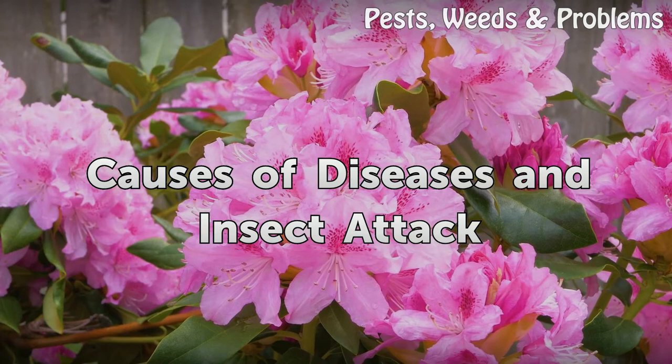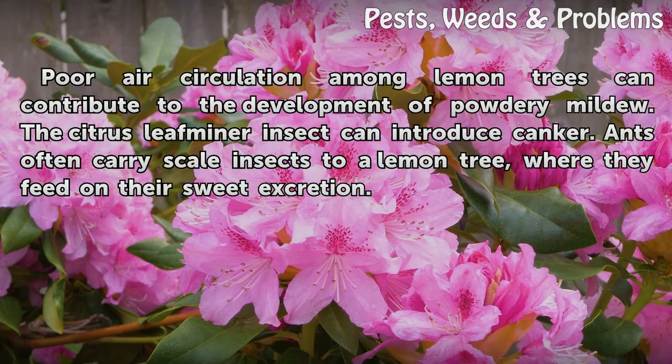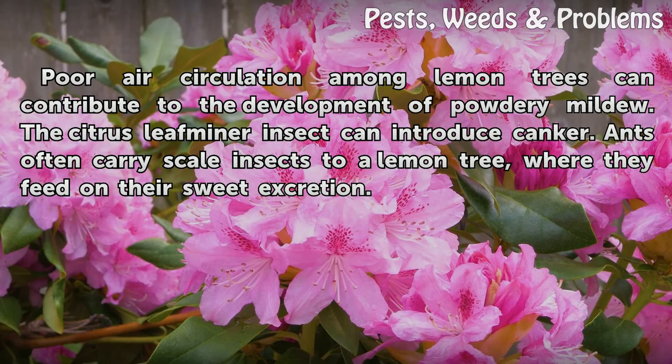Causes of diseases and insect attack. Poor air circulation among lemon trees can contribute to the development of powdery mildew. The citrus leaf miner insect can introduce canker. Ants often carry scale insects to a lemon tree, where they feed on their sweet excretion.